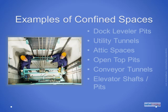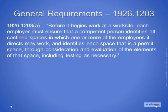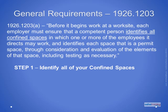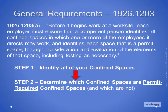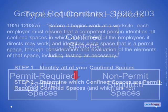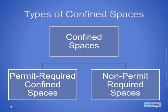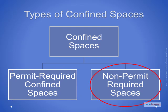We have now covered Step 1: learning to identify confined spaces. We will now focus on how to determine if a confined space meets the OSHA definition of a permit-required confined space. If a space is classified as a permit-required confined space, entry is only allowed under a confined space entry program meeting all of the requirements of OSHA's confined space standard. However, confined spaces that do not meet the OSHA definition of a permit space — known as non-permit required confined spaces — may be entered without following all those precautions.